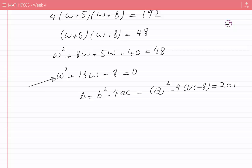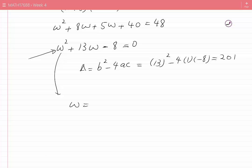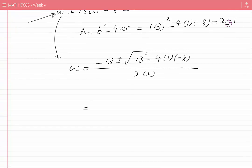I'll resort to the quadratic formula: W equals negative B plus or minus the square root of (B² minus 4AC), all divided by 2A. We can simplify this to negative 13 plus or minus the square root of 201, divided by 2.